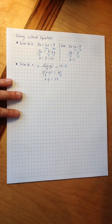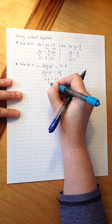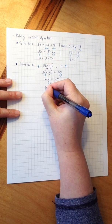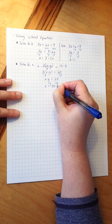My last step here to get x alone is to add y to both sides. This gets me x equals 20 plus y.